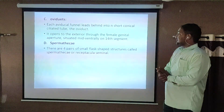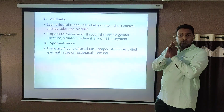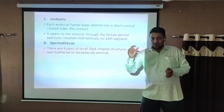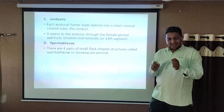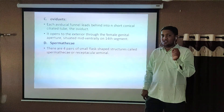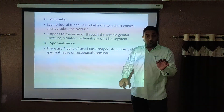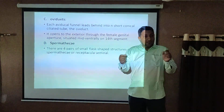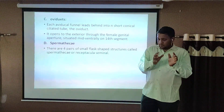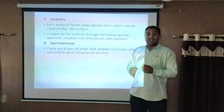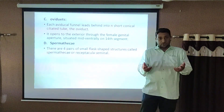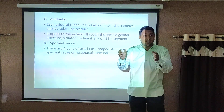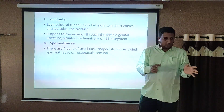The last structure is the spermathecae. This is a sac-like structure which contains a large sac and a small diverticulum. The function of the spermathecae is to store the sperm of the opposite earthworm during copulation. The sperm are temporarily transported to this structure, and when cocoon formation begins, the sperm are deposited into the cocoon or egg capsule.